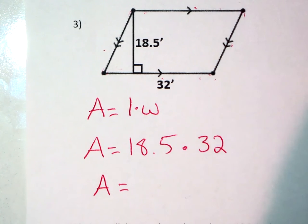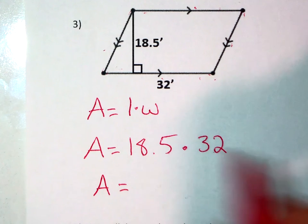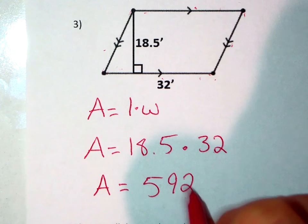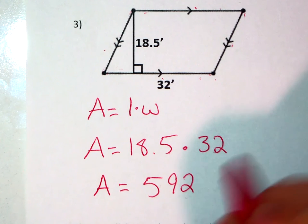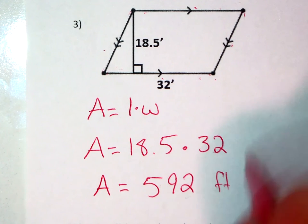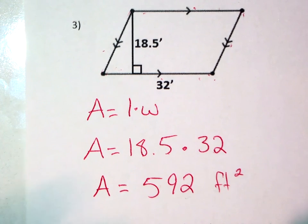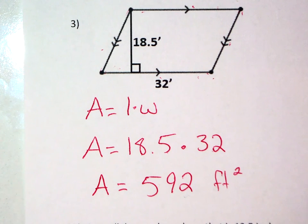So my area when I multiply 18.5 times 32 is 592, and we will call this squared. Hopefully that gives you a good quick review of finding the area of a trapezoid and parallelogram.